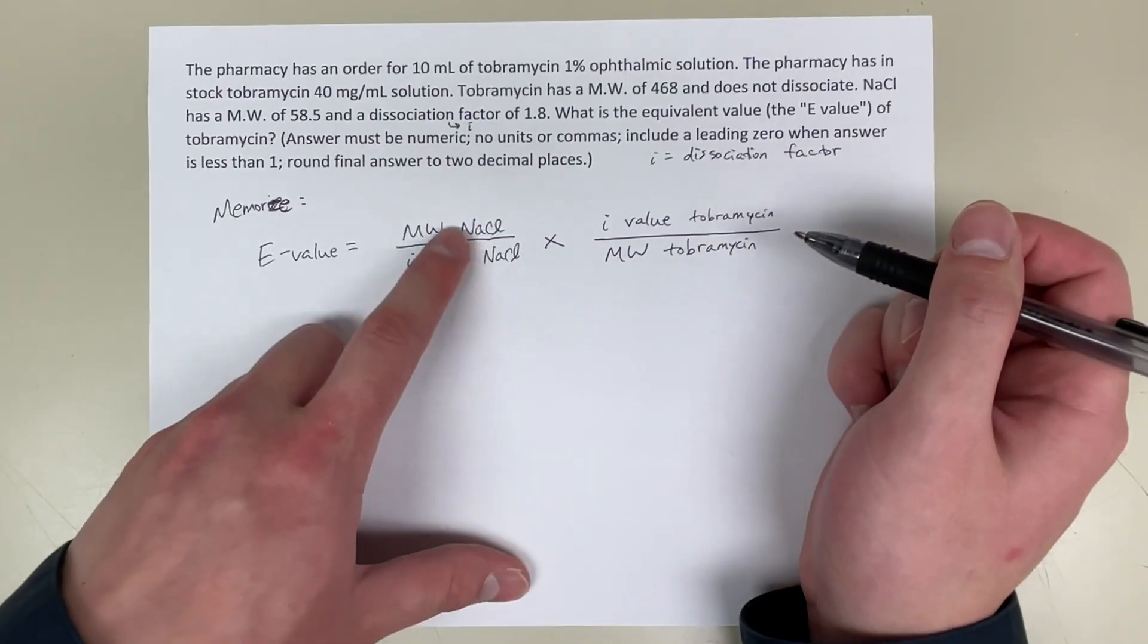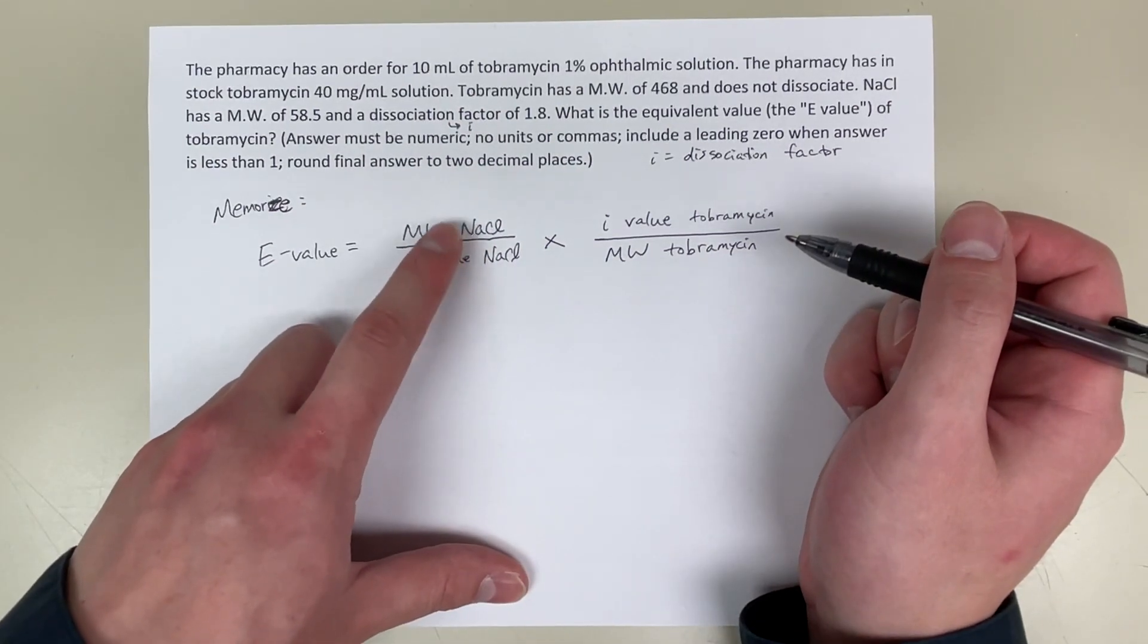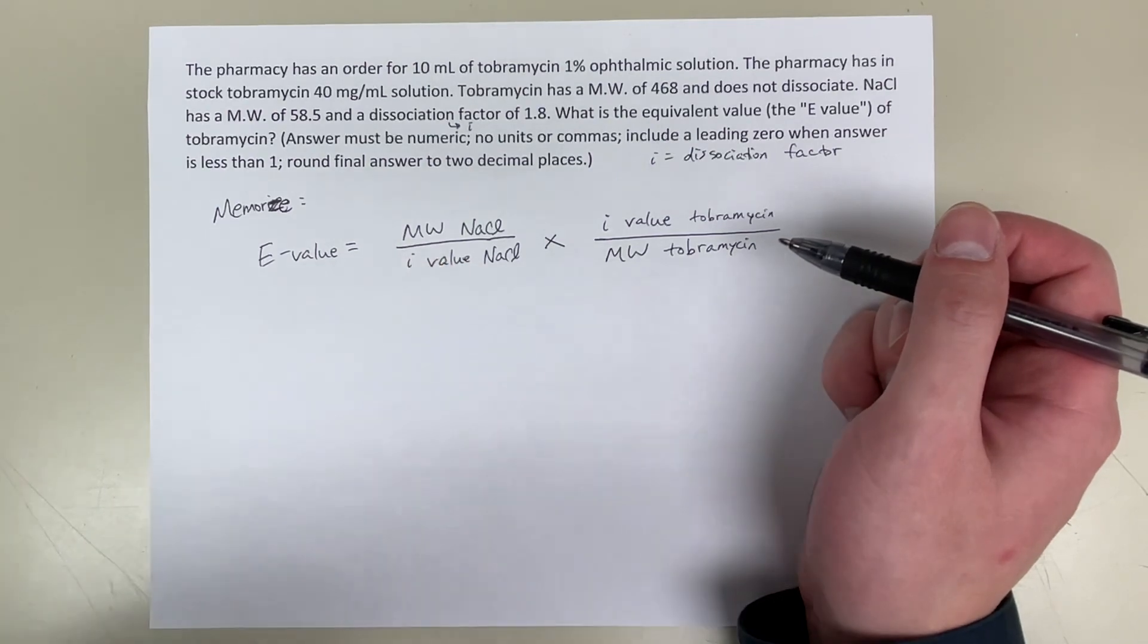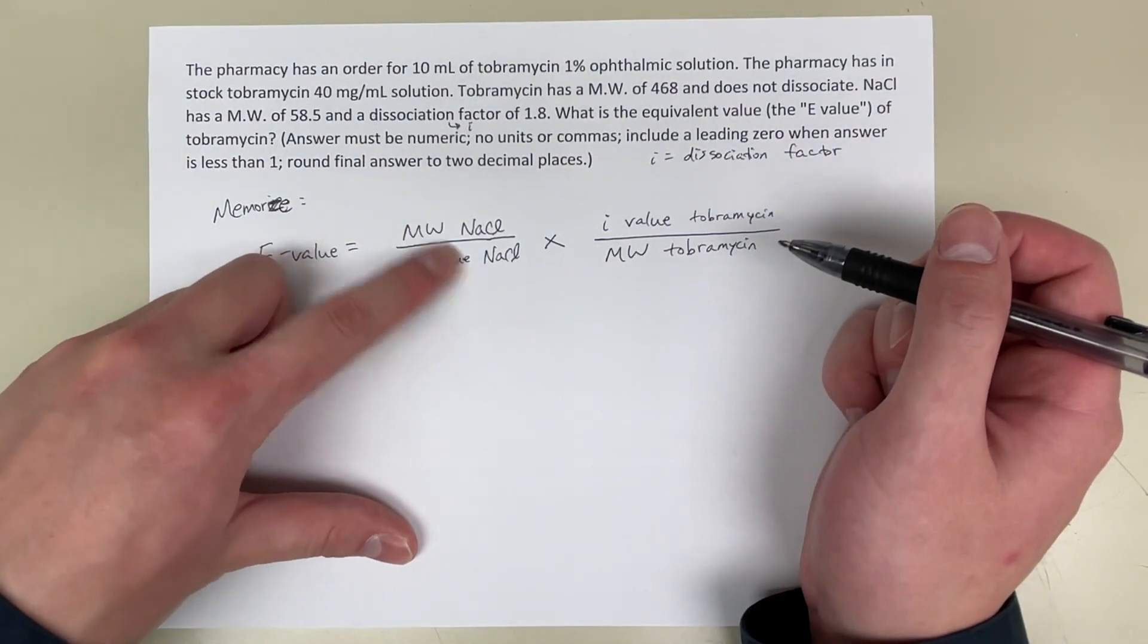In the NAPLEX, you're always going to get sodium chloride because they always have the equivalent of that in the question. That's why sodium chloride will always be on the left side here.